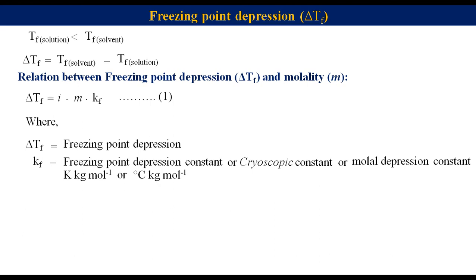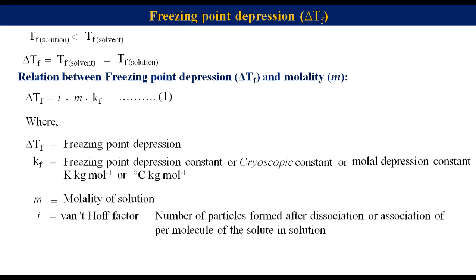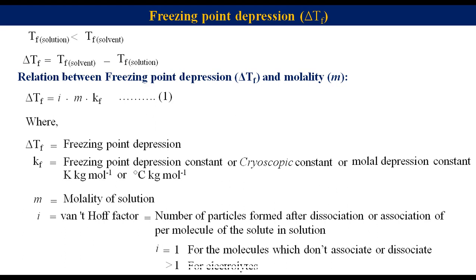Small m is the molality of the solution, and i is the van't Hoff factor, which equals the number of particles formed after dissociation or association per molecule of solute. i equals 1 for molecules that do not associate or dissociate, and i is greater than 1 for electrolytes. For example, i equals 2 for NaCl because it is a strong electrolyte that completely dissociates into Na⁺ and Cl⁻ to produce two ions.